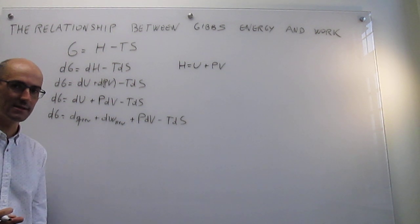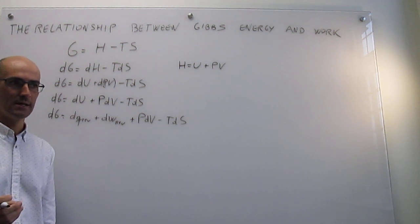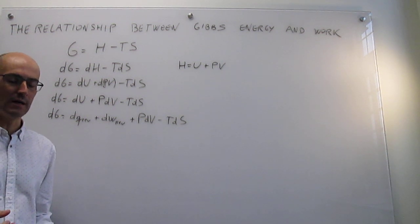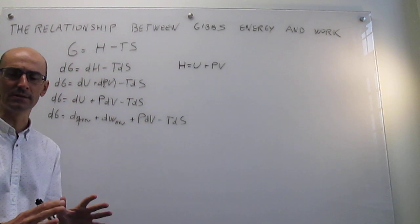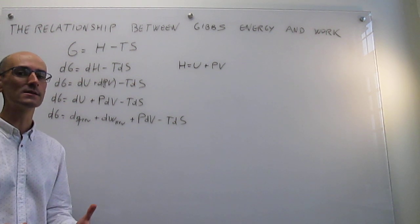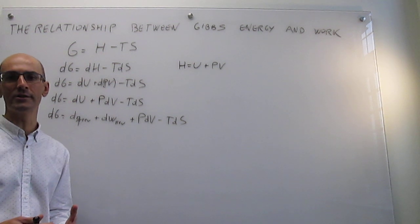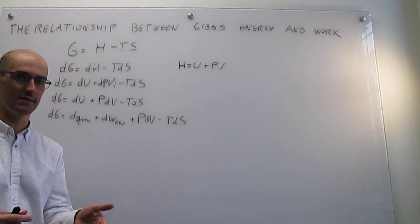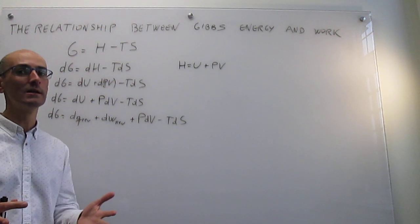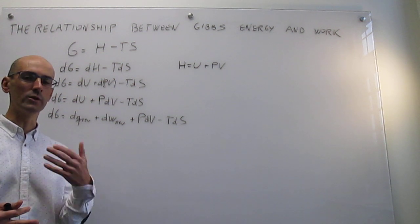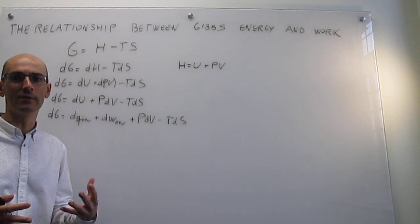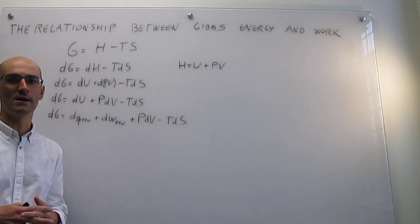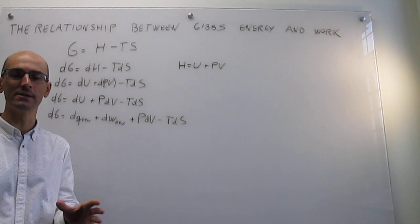Here comes a new concept we have not explored yet. Most of the work we've been handling until now has been expansion work — the case where a gas is pushing against a piston. But that's not the only type of work. For example, every time you charge your laptop or cell phone battery, that is electrical work, because there's a flow of electrons moving against a gradient. When you eat a banana, some of the energy stored in the glucose can be transformed to flex your muscle — that muscular work is another type of work which is not expansion.